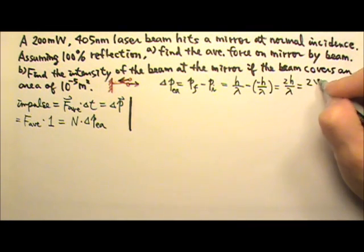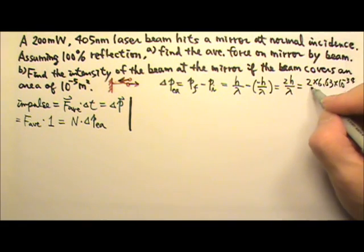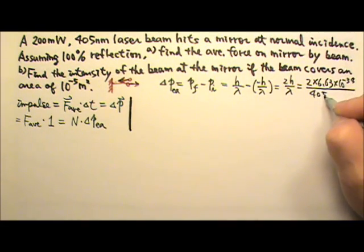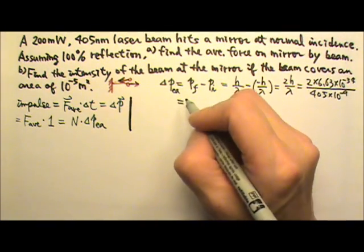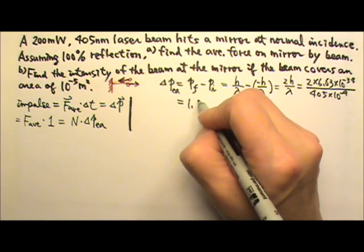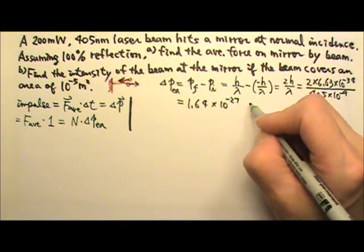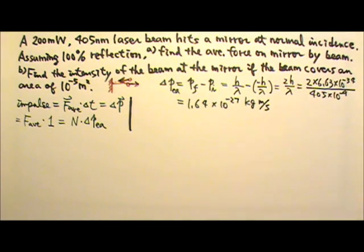This gives me twice h over lambda, which is two times 6.63 times 10 to the negative 34th over 405 nanometers. This gives a changing momentum for each photon equals 1.64 times 10 to the negative 27th kilograms meters per second.